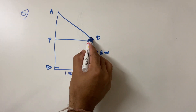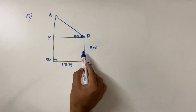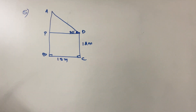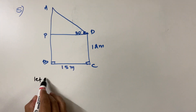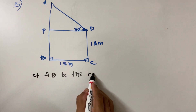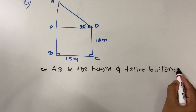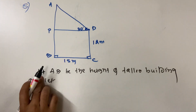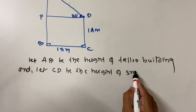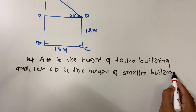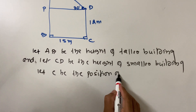Elevation means looking up. The angle of elevation from the top of the first building of height 12 meters to the top of the second building is 30 degrees. Find the height of the second building. Let AB be the height of the taller building and let CD be the height of the smaller building.